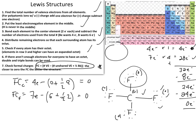The last check is to confirm that our formal charges add up to the overall charge of the molecule. Our molecule is carbon tetrafluoride — CF4 — and there is no charge on this molecule, so our summation should equal zero.